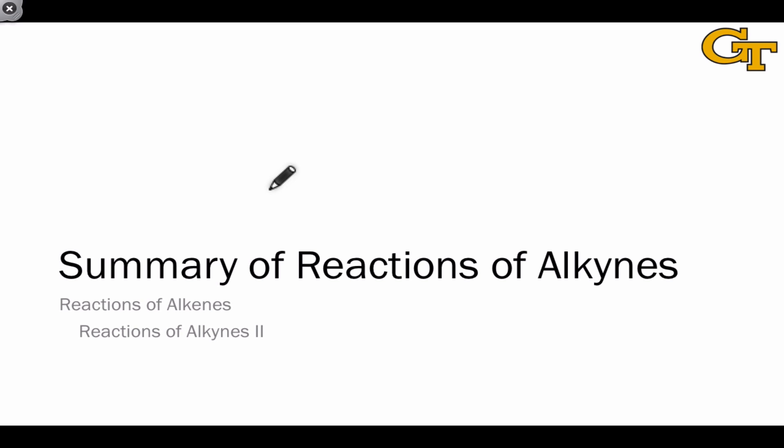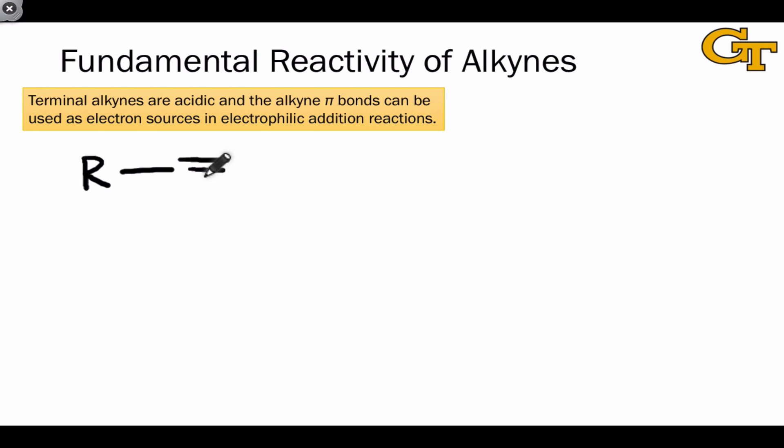Let's summarize the reactions of alkynes that we've seen in this lesson and the last. The first involves proton transfer and the fact that in the presence of a strong enough base, something whose conjugate acid typically has a pKa of 30 or more, we can deprotonate the terminal alkyne proton.